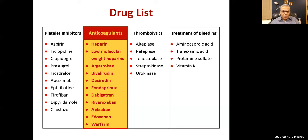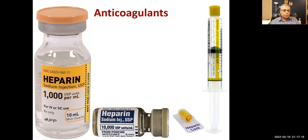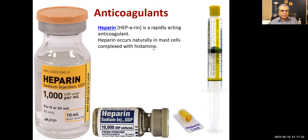We are going to start with heparin. Heparin comes in injectable form, including a heparin lock to prevent IV lines from clogging with clotted blood. Heparin is a rapidly acting anticoagulant. It occurs naturally in mast cells and basophils, is complexed with histamine, and is obtained from porcine intestinal mucosa.